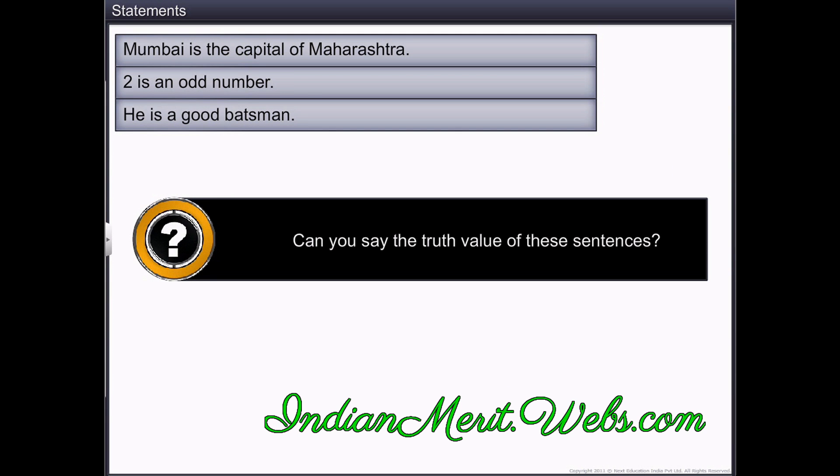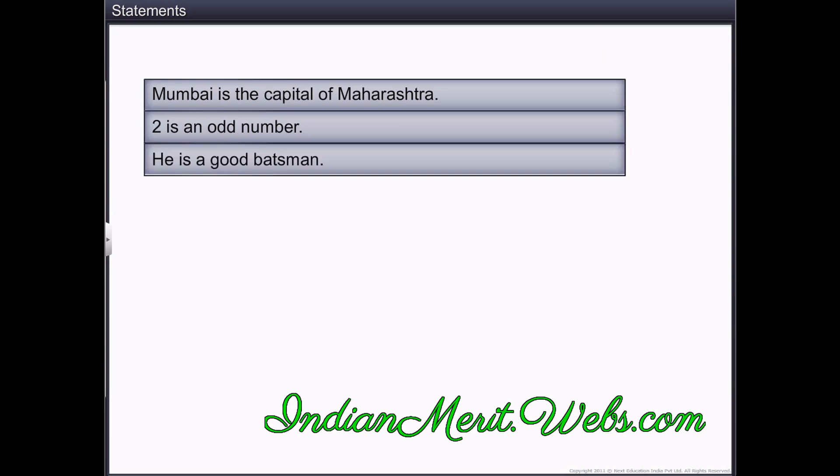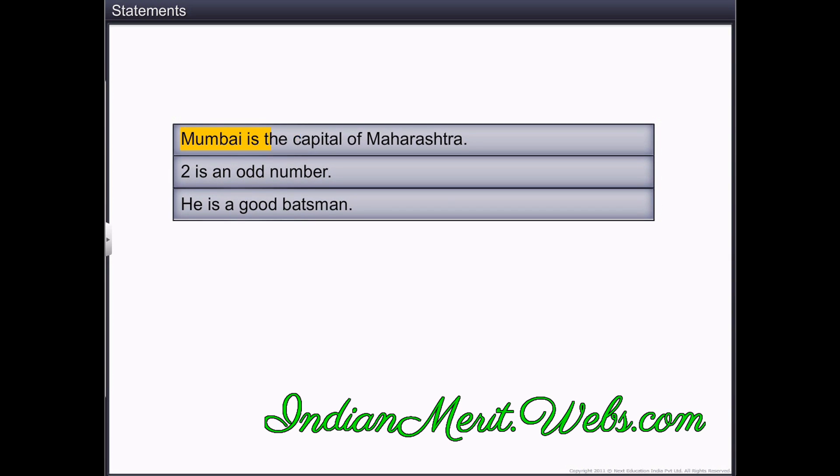Can you see the truth value of these sentences? We know that Mumbai is the capital of Maharashtra. And thus, this sentence is true. The second sentence, 2 is an odd number, is false.